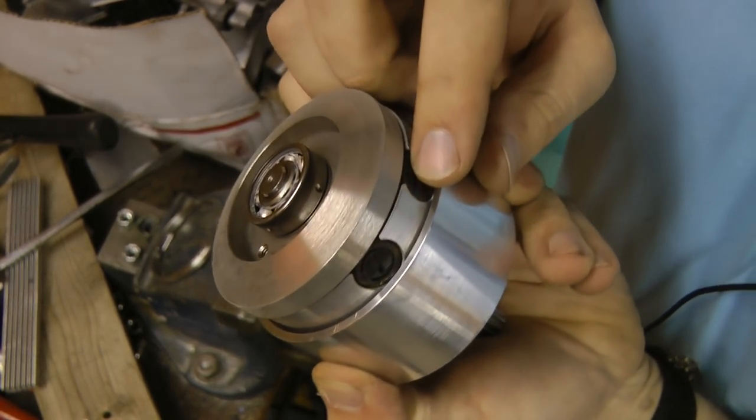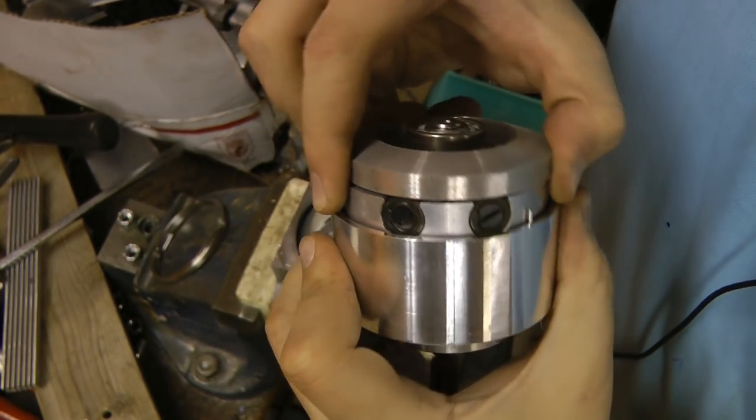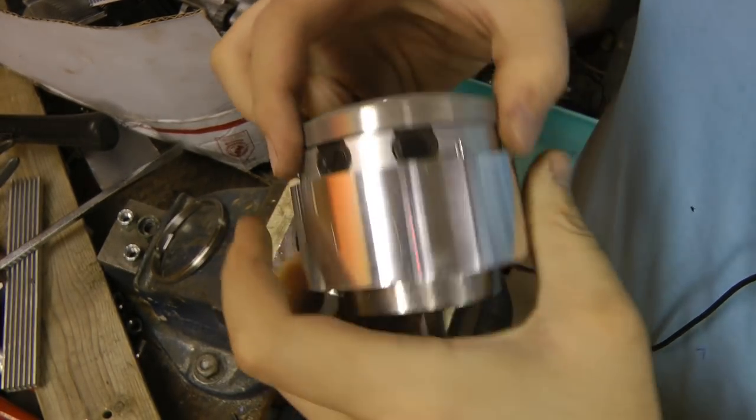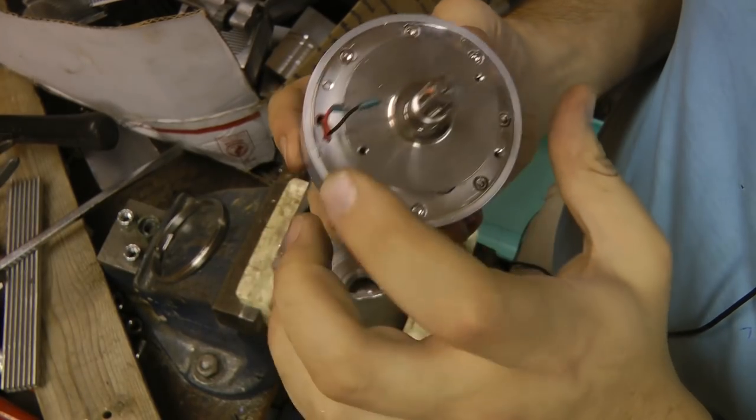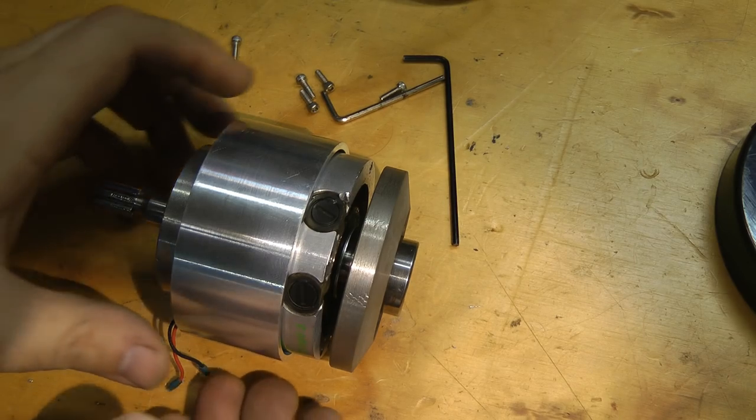Oh yeah, those look like brush covers. So, how do we get this thing the rest of the way apart? I'm guessing all these screws have to come out.